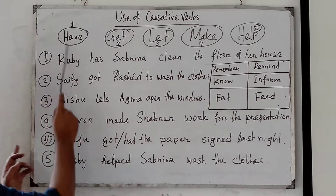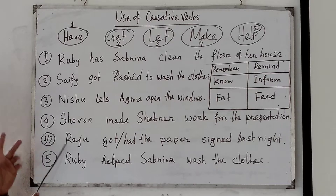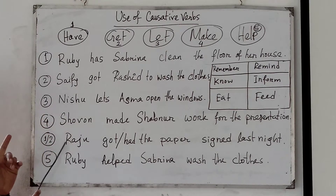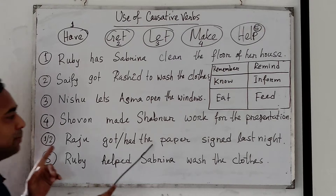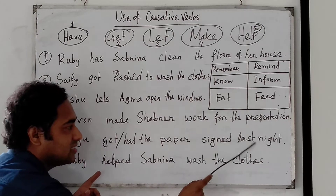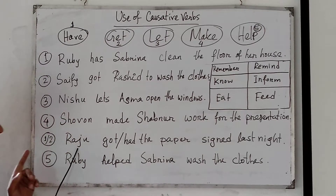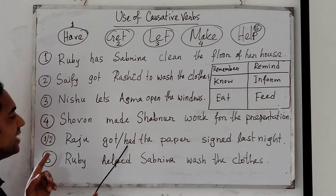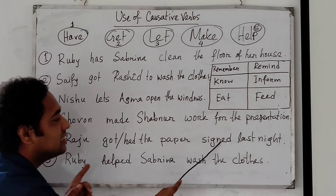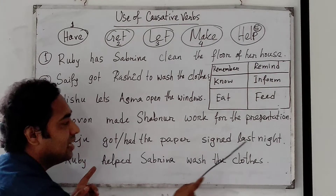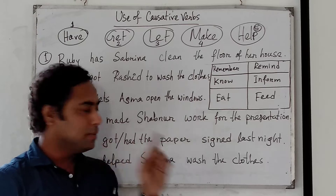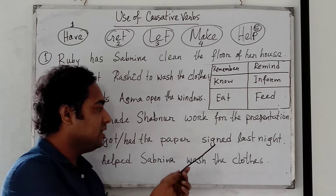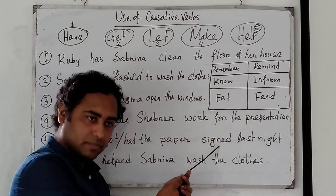If it is passive form — I talked about active, now passive. 'Raju got the paper signed last night.' 'Raju had the paper signed last night.' It is passive, that is why we use the past participle form of the verb.